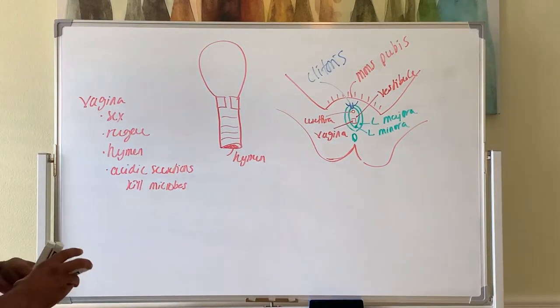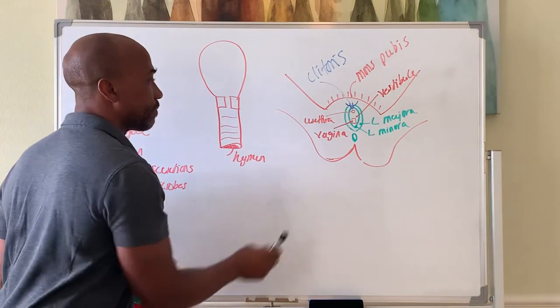So that is what we call the female external genitalia, things you can see from the outside.